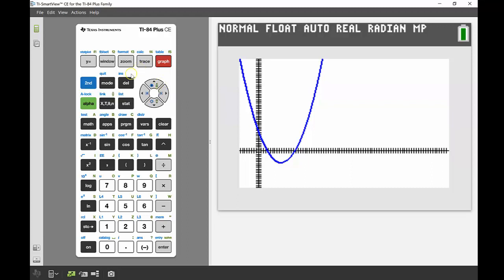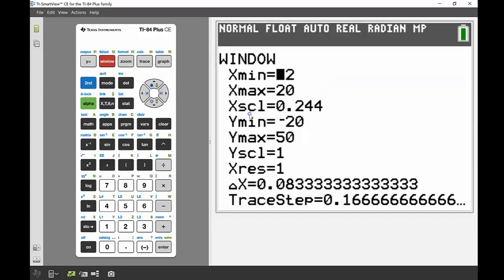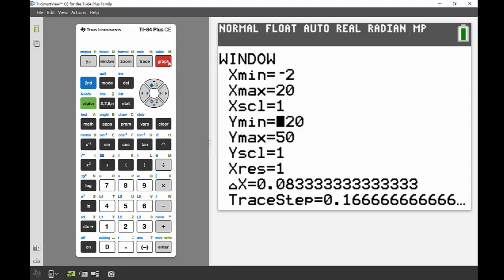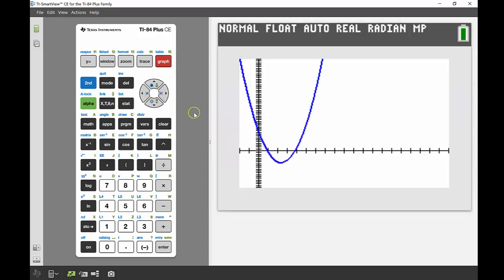I'll show you what my window settings are. I've got them set from negative 2 to 20 and then from negative 20 to 50. I'm just going to change my x scale actually because that's not looking great, so I'm going to change that to 1. There we go, we can see that graph looking really nicely.